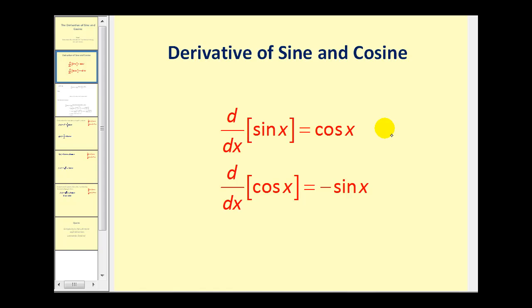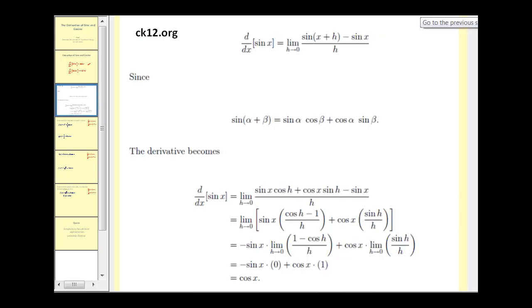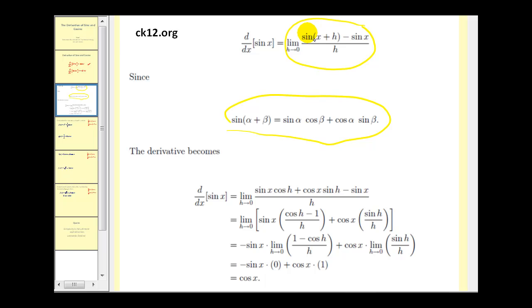Let's take a look at a proof of this first derivative. If we apply the limit definition of the derivative, we would have the limit as h approaches zero of this quotient. Now if we use the sum identity for sine, as we see here, we could expand this term to the sum of these products.